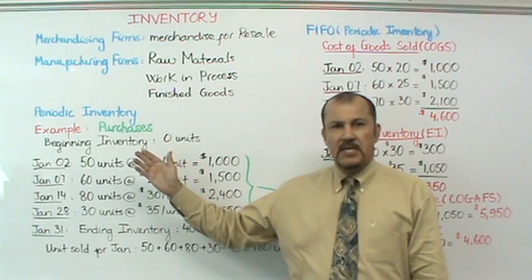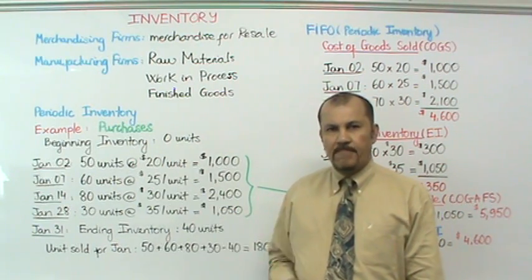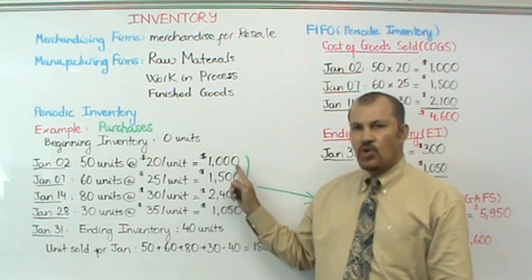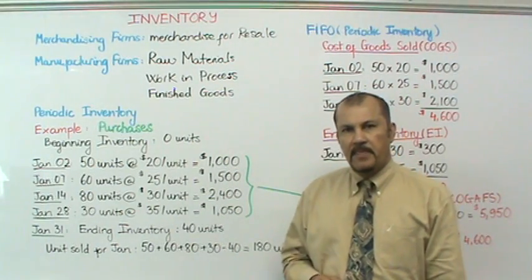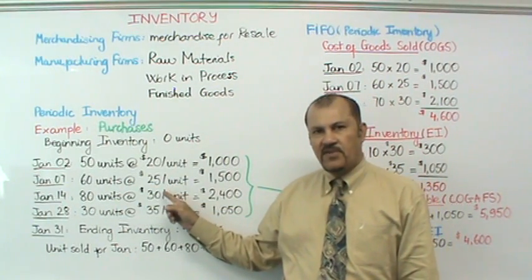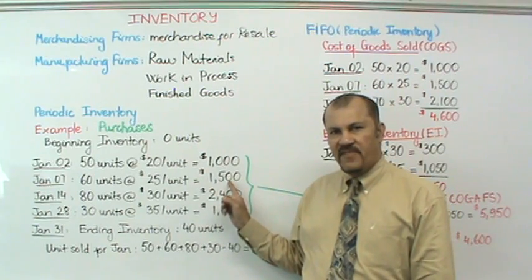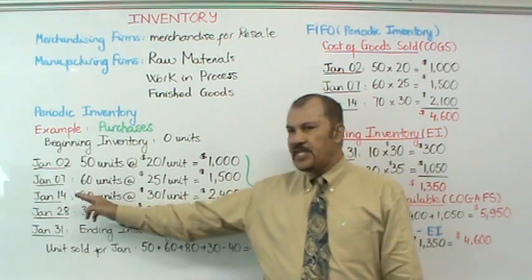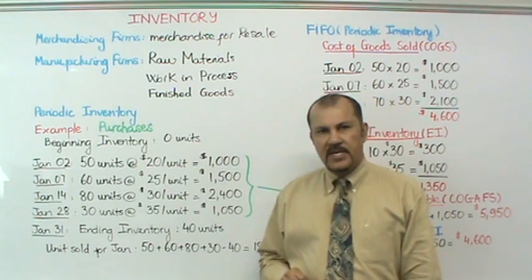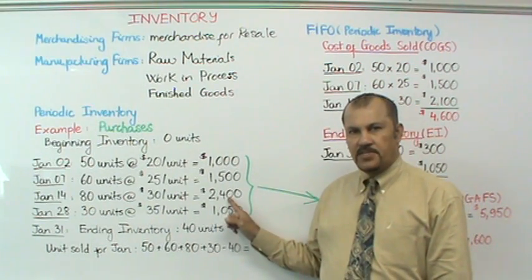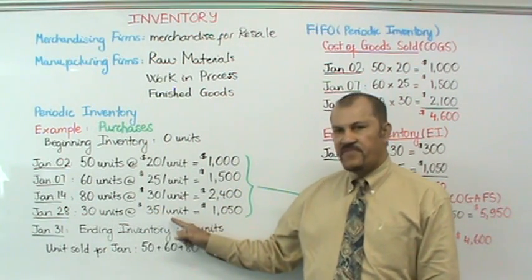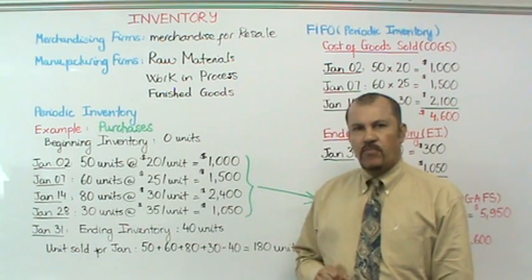Assume that a company has zero beginning inventory — no units at all. Then on January 2nd, they purchased 50 units at a unit cost of $20 per unit for a total batch cost of $1,000. Then on January 7th, they purchased 60 units at $25 per unit for a total batch cost of $1,500. And finally on the 28th, they purchased 30 units at $35 per unit for a total batch cost of $1,050.